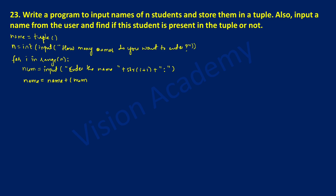The variable name starts as an empty tuple, and as the user enters names it will go on adding each one to this variable. We need to put a comma here and then close the bracket, so that each element is inserted into the tuple one at a time. With the alignment of the for loop, I'll write a print statement to print 'names entered are', and whatever names were entered by the user will be printed. I'll put a comma and write the name of the variable.